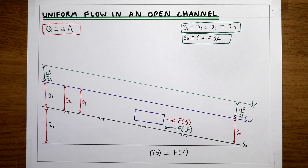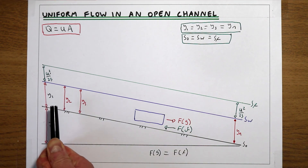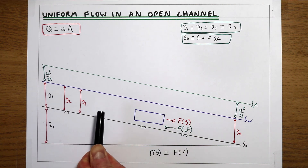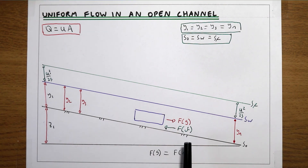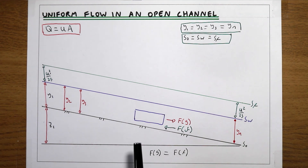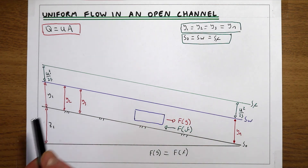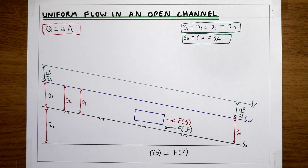Initially the fluid would be accelerating down the channel, but as it accelerates the friction force increases, because friction is a function of flow velocity. Eventually you hit a point where the two forces are equal, the system balances, and you end up with a consistent velocity and therefore a consistent flow depth. This is what gives us our uniform flow.